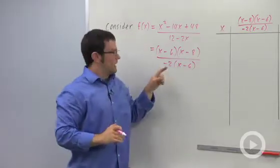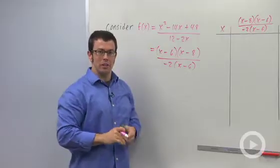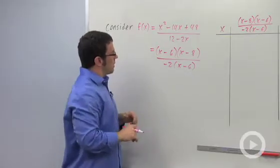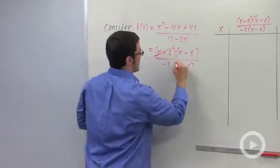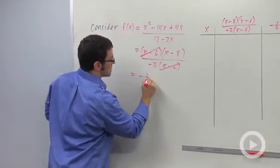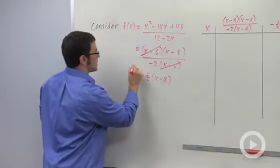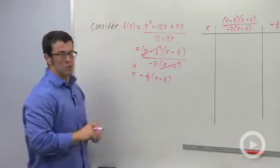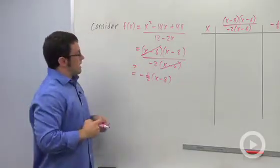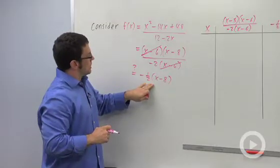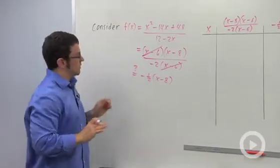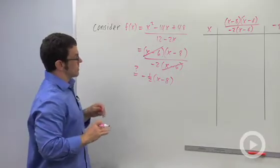So this is interesting. I've got the same factor in the numerator and denominator, and I want to know, is it okay just to cancel? Is this just the same as negative one-half x minus 8? Let's only write a question mark there. Let's analyze the behavior of this function and the function before the canceling, just to see what the differences and similarities are.